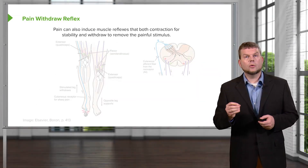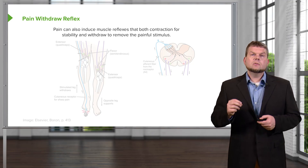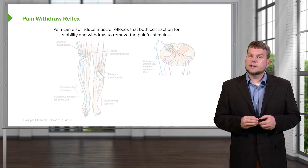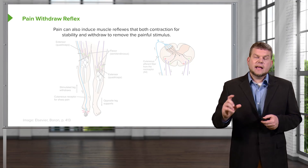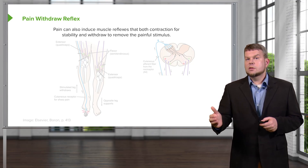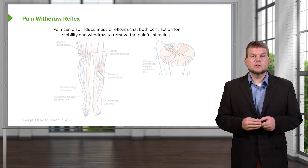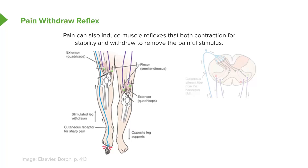Pain withdrawal reflex. This is one of our more complicated reflexes and involves many aspects including both sides, or two limbs. This revolves around something like stepping on something painful. We have all done this before — you stepped on something that was really sharp. There is a reflex that happens that doesn't involve the brain, just the spinal cord, for you to respond to this.